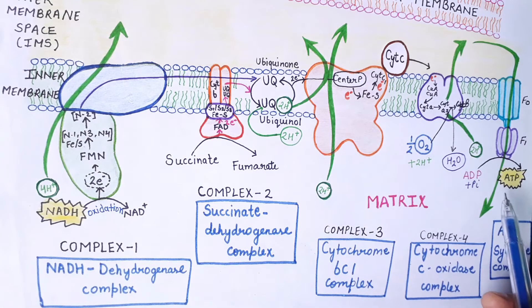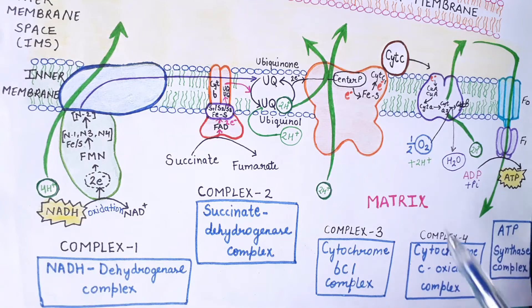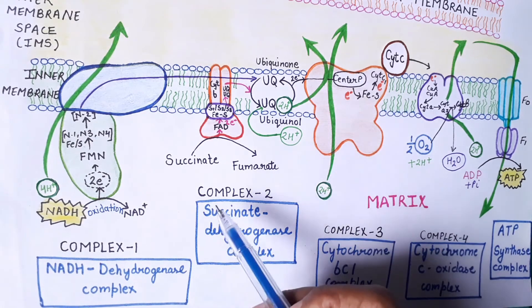However, in the case of substrate level phosphorylation, there is direct generation of ATP. So oxidative phosphorylation involves substrate oxidation coupled with ATP formation.